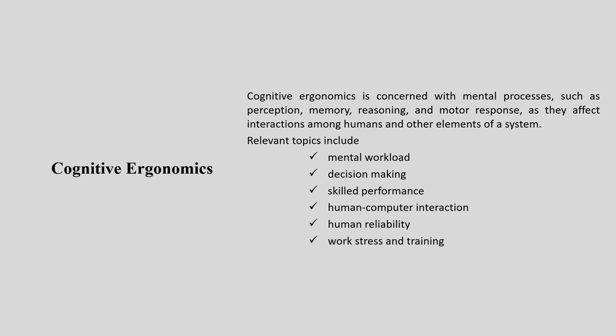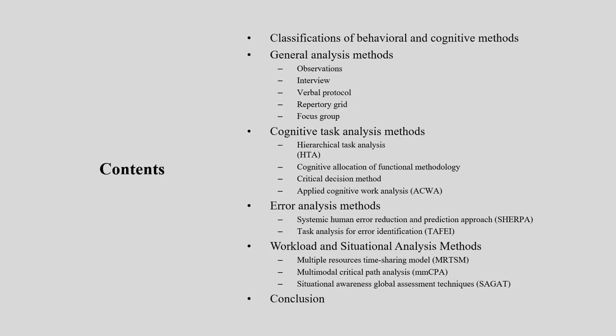Whenever we are talking about cognitive ergonomics, perception, memory, and reasoning are very important. Mental workload, decision making, skilled performance, human-computer interaction, human reliability, and work stress and training are the major components we talk about in cognitive ergonomics. Apart from that, we can coin many other terminologies.